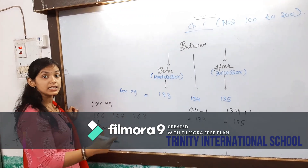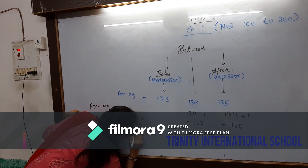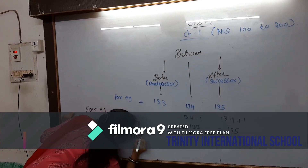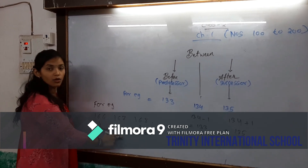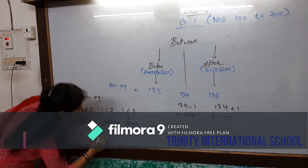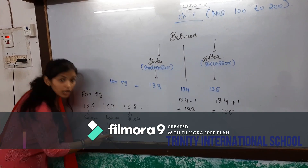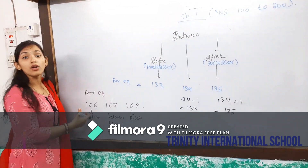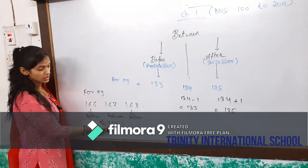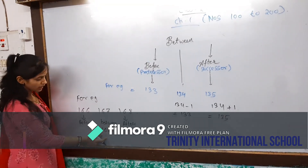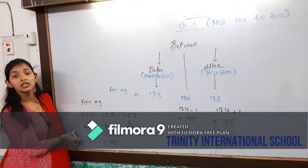Successor we can call as after. In 167, if you minus 1, then you got your predecessor — that means your before number. 167 minus 1, it will come 166. So 166 is your predecessor.